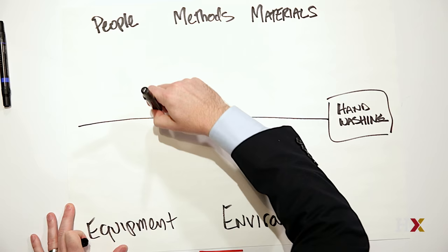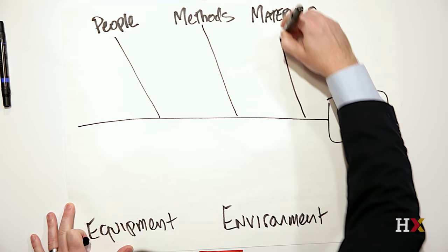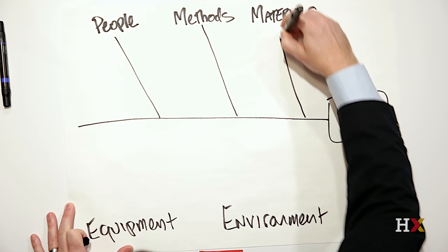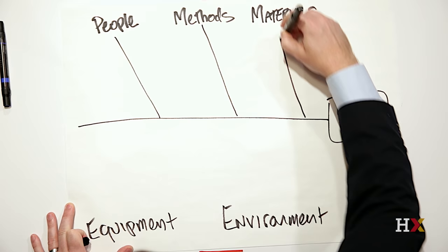Then we can draw a diagonal line to each of these. And these are actually the bones of the fish, hence its name.